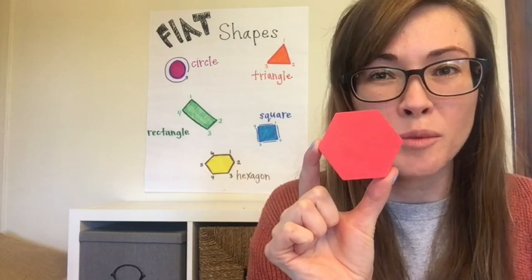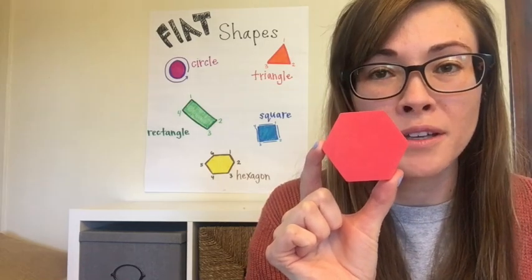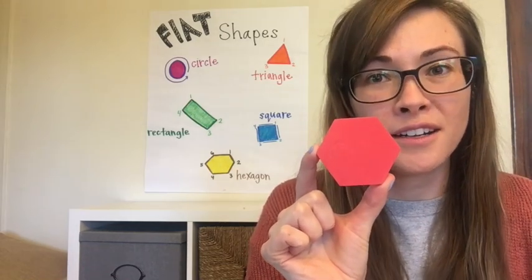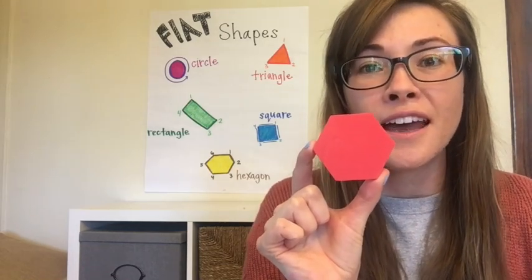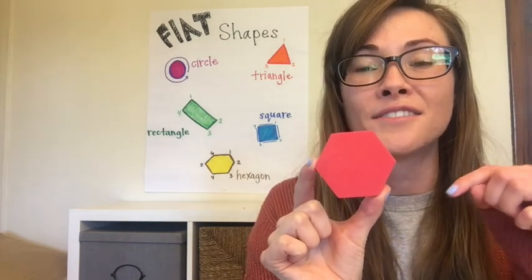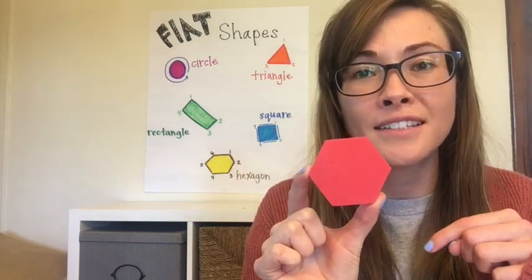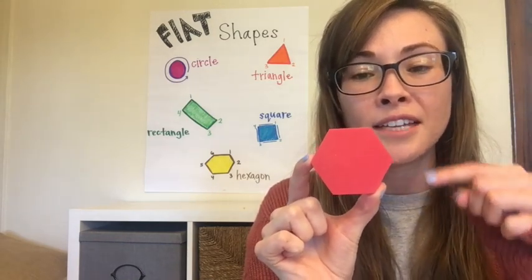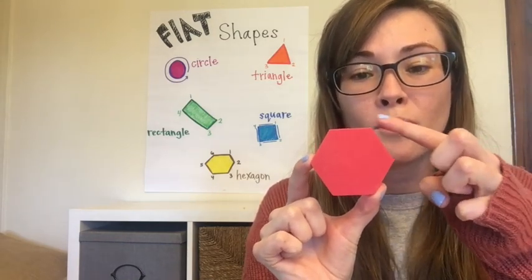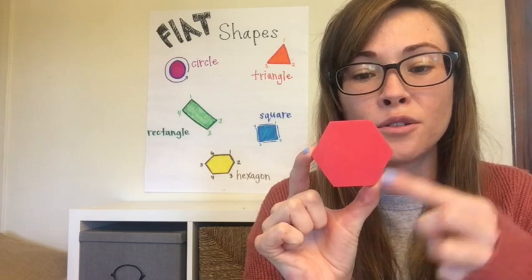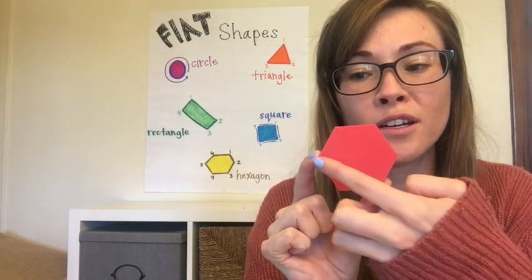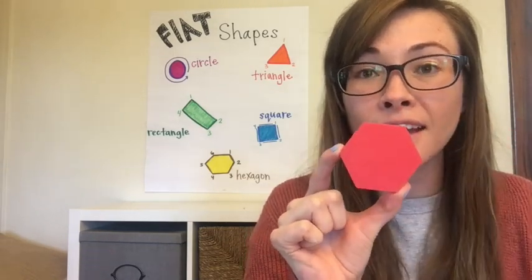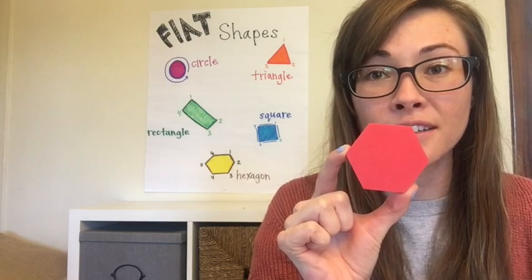Do you remember this shape? This is a hexagon. Hexagons have six sides and six corners. Let's count: one, two, three, four, five, six. It's a hexagon.